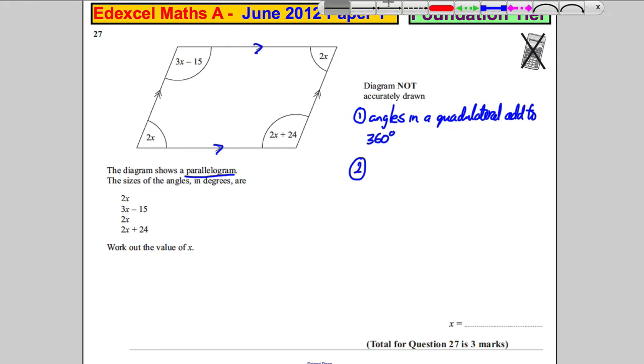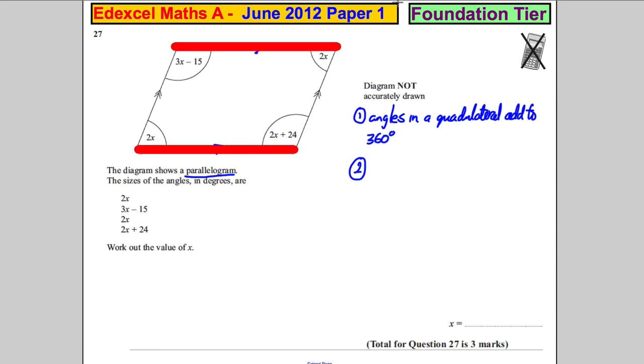And you will remember one of your rules: if you have two parallel lines, one of the rules is that interior angles add up to 180. So those two add to 180, and also those two add to 180.